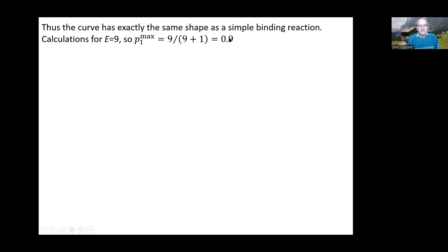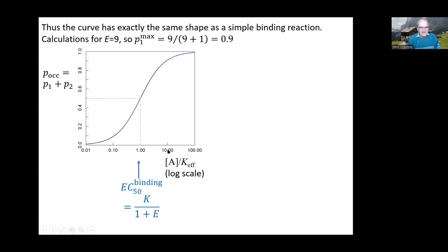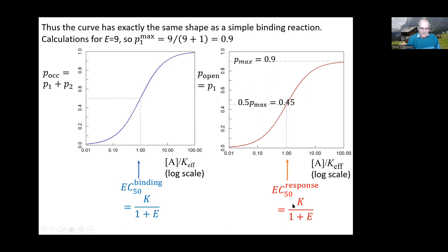As a numerical example, with efficacy E = 9, the maximum fraction in the active state is 9/10 = 0.9. The binding curve (P1 + P2) reaches half-maximum at concentration K/(1+E) = K_effective. Similarly, the activation curve has maximum response 0.9, and half-maximum response 0.45 occurs at exactly the same concentration K/(1+E). Binding and activation curves have identical EC50 values.